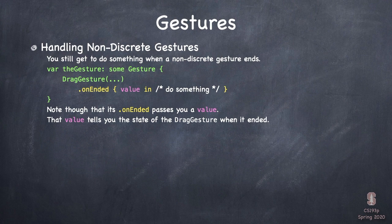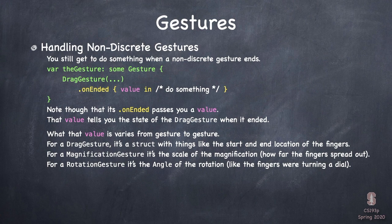Just like discrete gestures, we can find out when non-discrete gestures end with `.onEnded`. The only difference is the closure gets an argument — when a DragGesture ends, you want to find out what happened during that drag. This value argument is different for every kind of gesture. For a DragGesture, it's a struct with the starting position and ending position of the finger. For MagnificationGesture, it's the scale. For RotationGesture, it's how much angle it turned before the fingers lifted up.